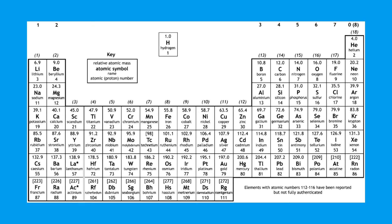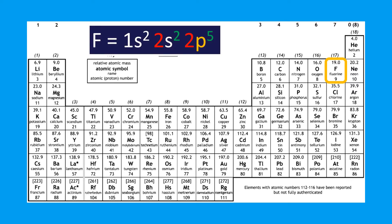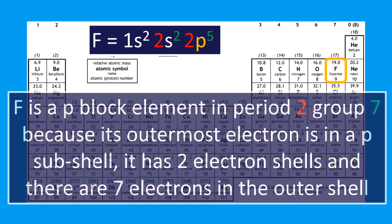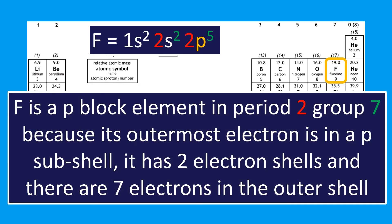Let's take this a step further and use electron configuration to identify position on the periodic table. Fluorine has the electron configuration 1s² 2s² 2p⁵. It's classified as period two because it has two electron shells — the highest shell number in its configuration is two. It's classed as group seven because in the second shell, the 2s and 2p together, there are seven electrons: five plus two is seven. So it's group seven, period two.